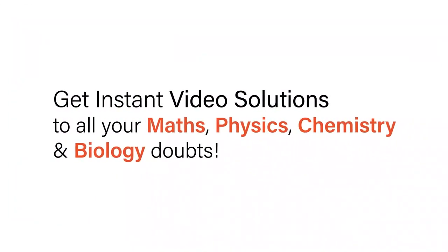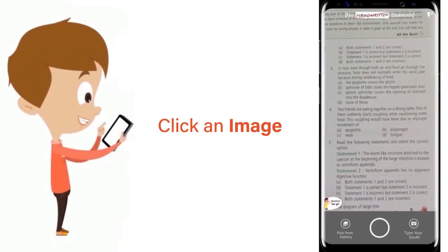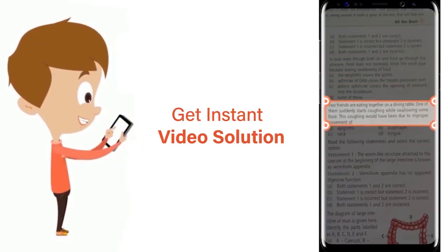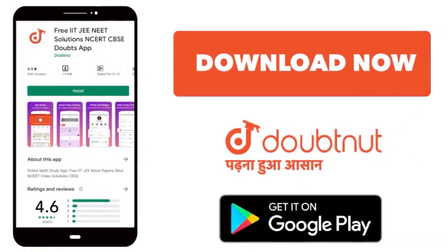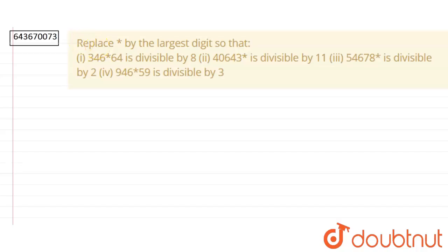With Doubtnet, get instant video solutions to all your maths, physics, chemistry, and biology doubts. Just click the image of the question, crop the question, and get instant video solution. Download Doubtnet app today. In this question, we have to remove these asterisks by the largest digit so that the following condition could take place.